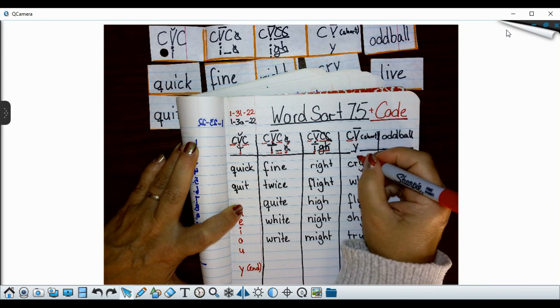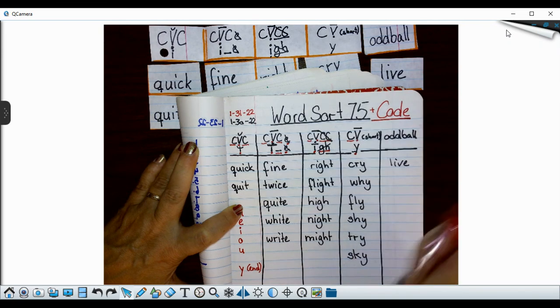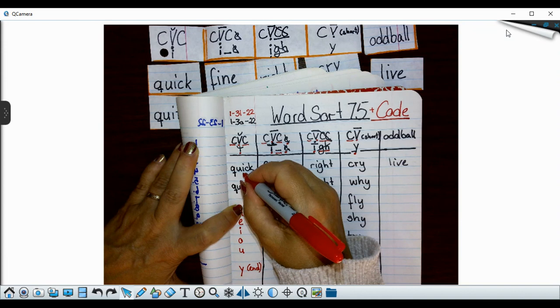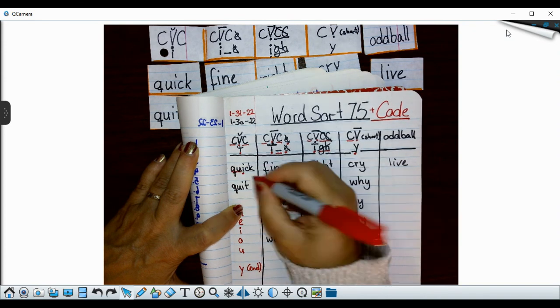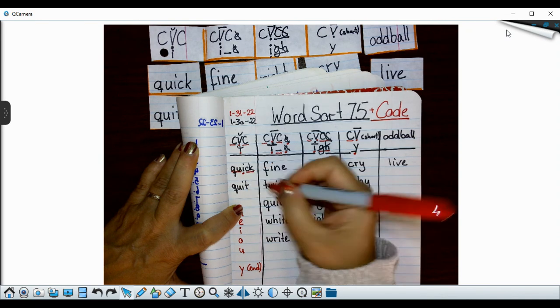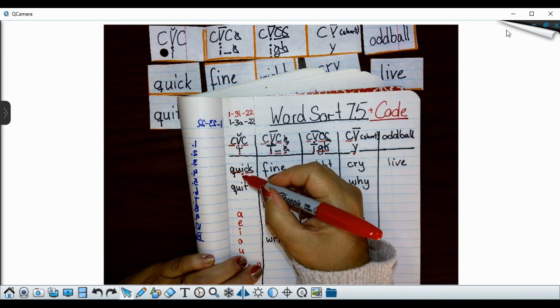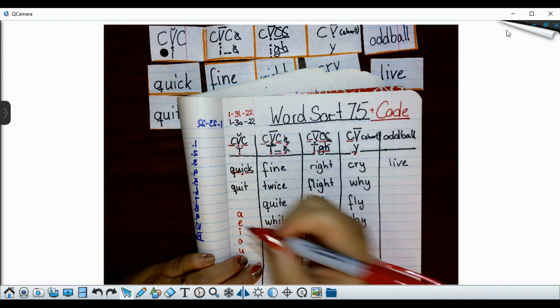Ready? So I'm going to start with my first word quick. I know my I is my vowel. I know the Q-U always goes together and I know the C-K is a digraph so that goes together and here it is my consonant, vowel, consonant pattern. Yep consonant, vowel, consonant.